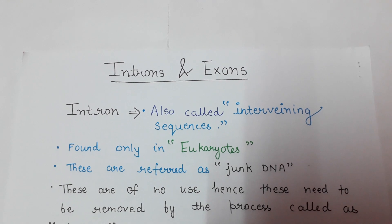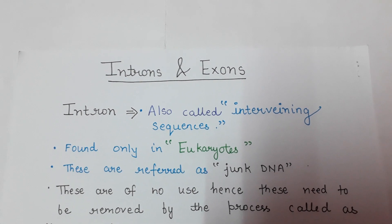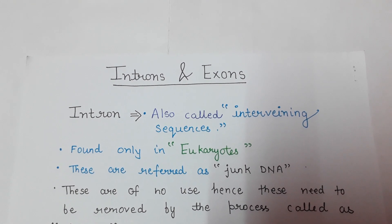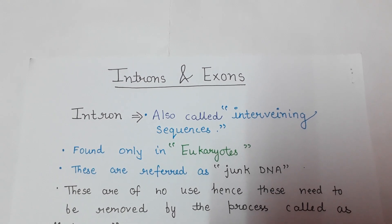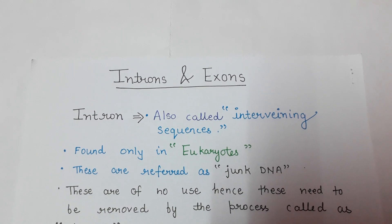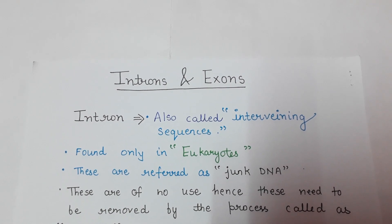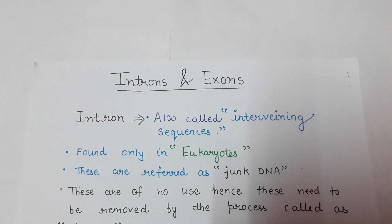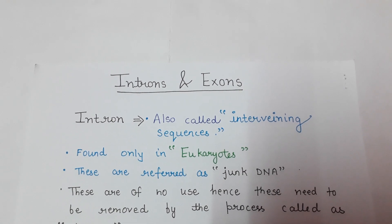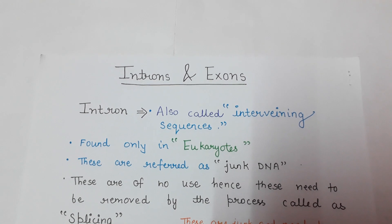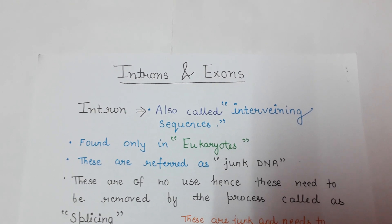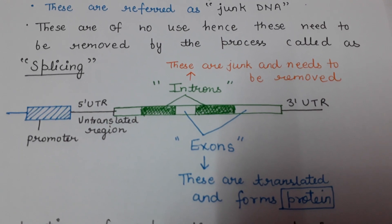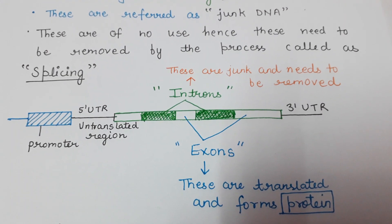Today we are going to discuss introns and exons. Introns are called intervening sequences, also referred to as junk DNA because they are of no use. Introns and exons are found only in eukaryotes — they are absent in prokaryotes, which is a key difference. Introns need to be removed by a process called splicing, which removes introns from the mRNA.